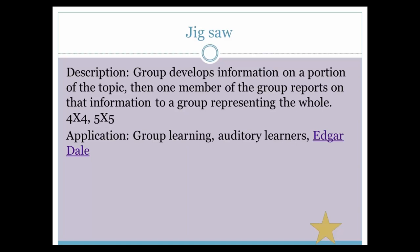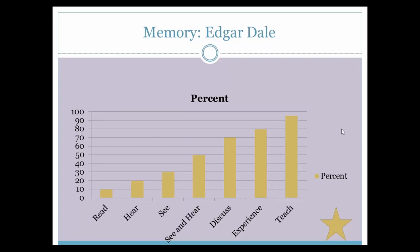It's a bit complicated to wrap your brain around, but it's great for group learning and excellent for auditory learners because they hear. And has anybody heard of Edgar Dale? He says you remember 10% of what you read — that's why students say they can't remember what they read. You remember 20% of what you hear, 30% of what you see. If you see and hear it, you're up to 50%. If you discuss it, you're at 70%. If you experience it, you're at 90%. And if you teach it, you're at 95%.